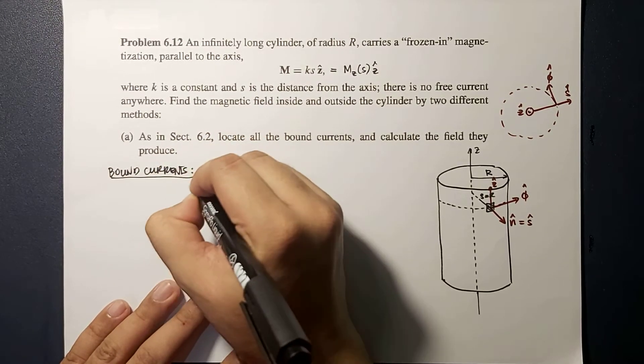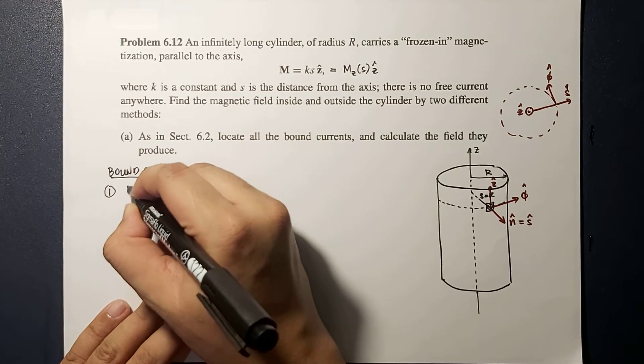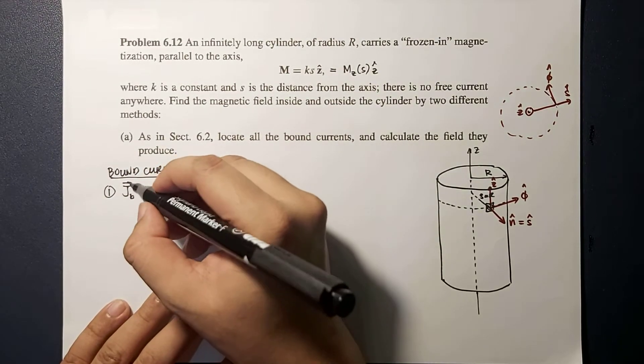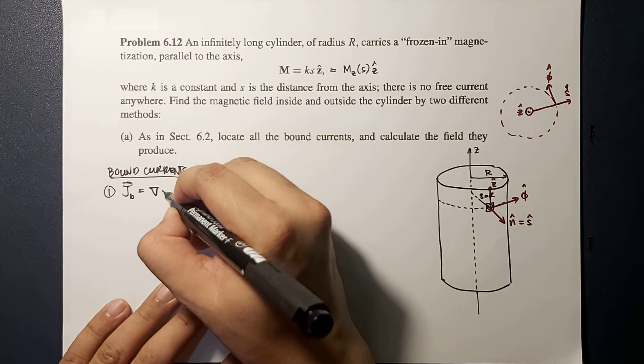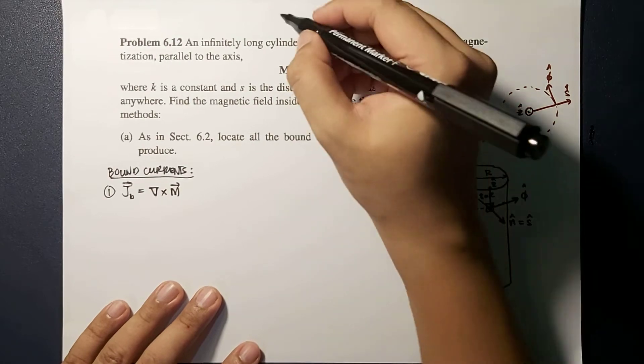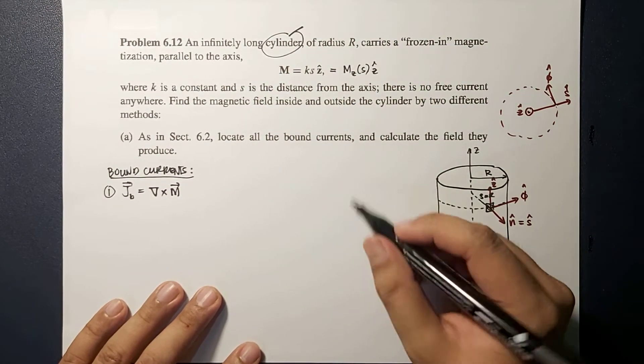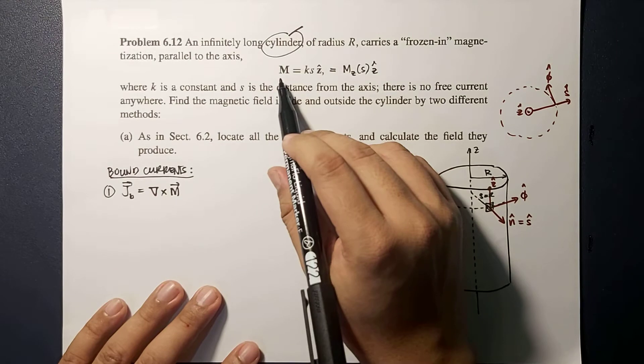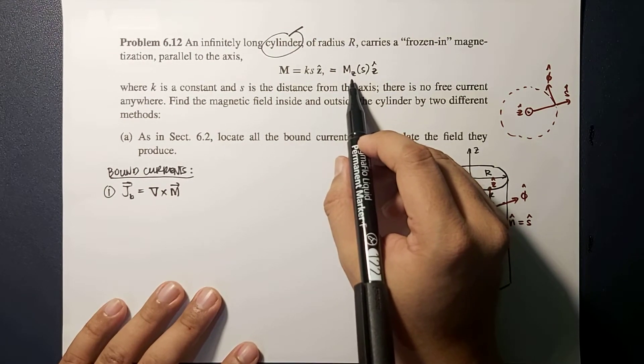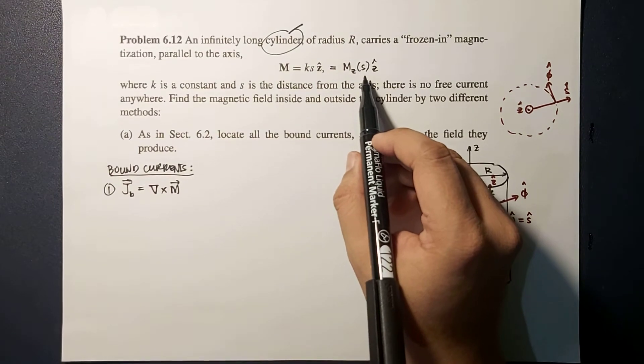So the bound current, number one, that's your volume current, is equal to the curl of your magnetization. Because we're using a cylindrical coordinate system and we already know that the magnetization M only has one component, the Z component, as a function of S.